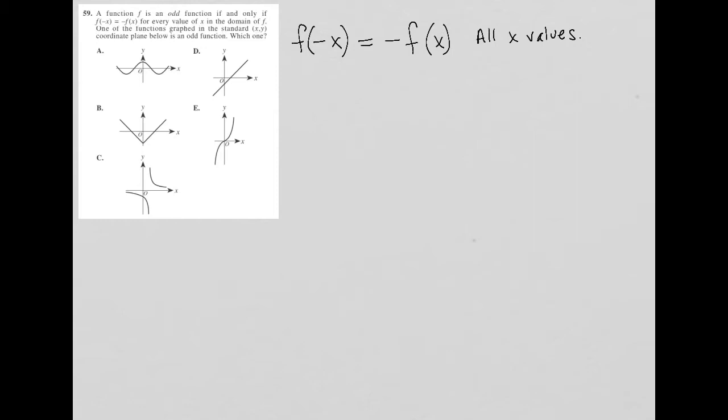Before we jump into looking at the answer choices and trying to figure out which one of these graphs is an odd function, I think it's worthwhile to determine what does this statement even mean. What is f of negative x equals negative f of x? My mind goes back to the fact that f of x is the same as y. So it's really just a y value.